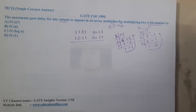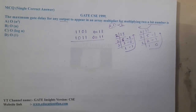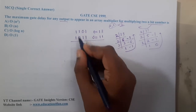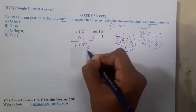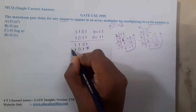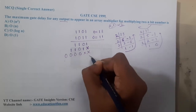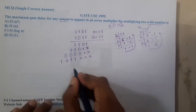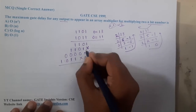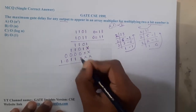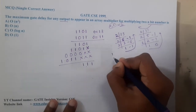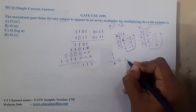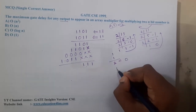Now we can do the multiplication. Binary multiplication is easy — 1×1=1, 1×0=0. You write partial products in the same way as normal multiplication, shifted appropriately. When adding, remember: 1+1 gives 2, but in binary there is no 2, so you write 0 and carry 1.